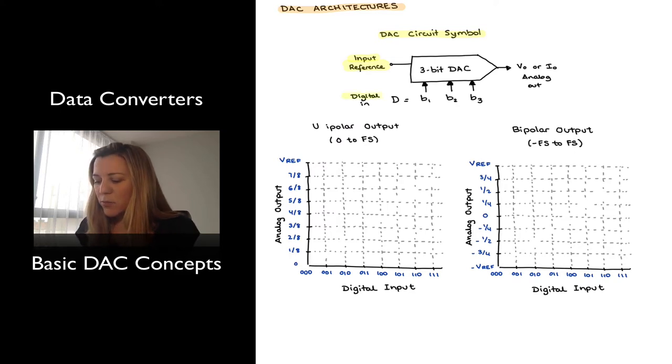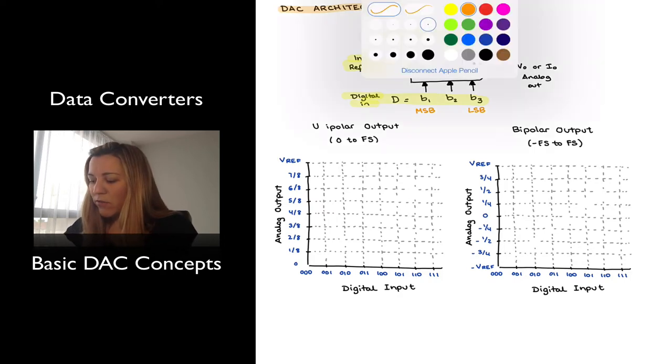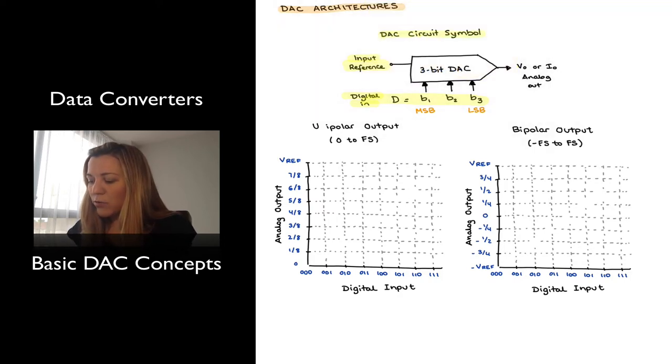Then I have my digital input, which is basically my digital word. In this case, I have a 3-bit DAC, so a 3-bit digital word, B1, B2, B3, where B1 represents my MSB, my most significant bit, and B3 represents my LSB, or my least significant bit. And finally, I have my analog output, which again can also be either a voltage or a current, so Vout or Iout.